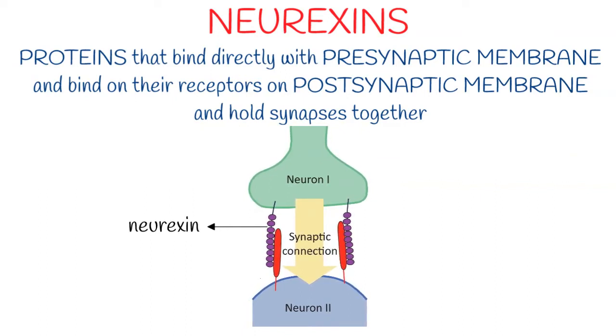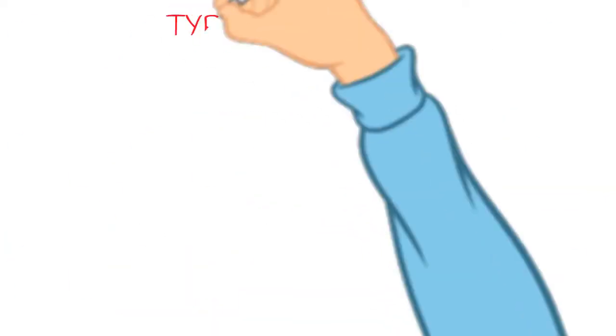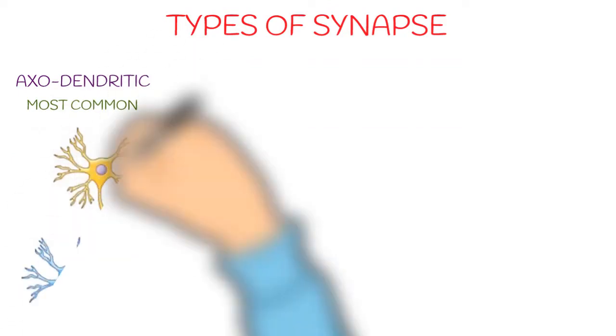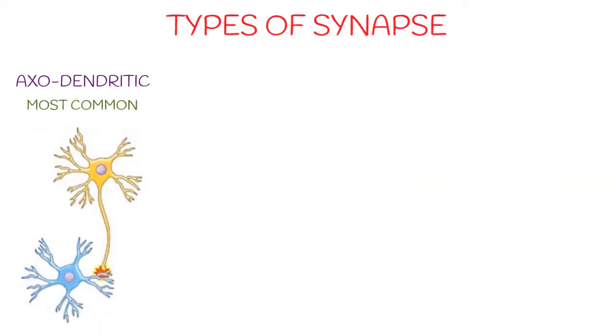Next is types of synapse. Basically, synapses can form in four types. First is axodendritic, means between axon and dendrites. This is the most common type. See this yellow axon terminating on blue dendrite. The highlighted red portion is the area of synapse.